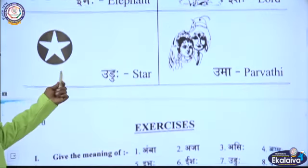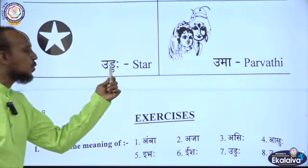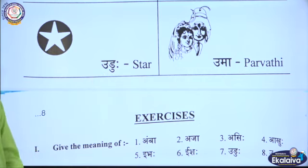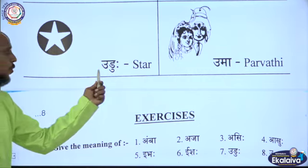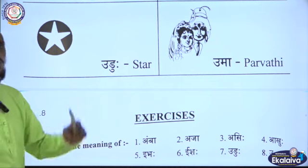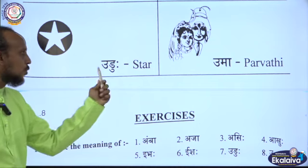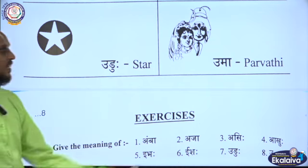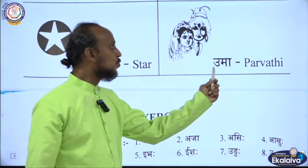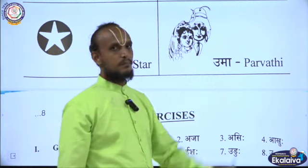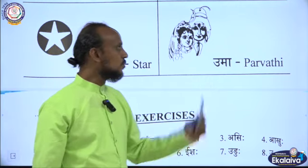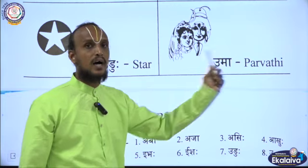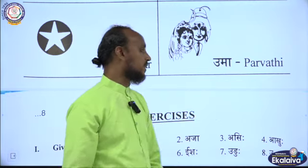Then the next one. Uduhu — star. Uduhu — star. Then the next one: Uma, Uma — Parvati.